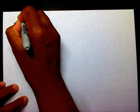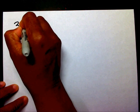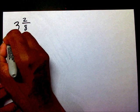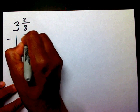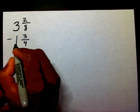Alright, let's get started. So, let's say I had three and two-eighths minus one and three-fourths.